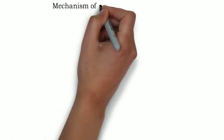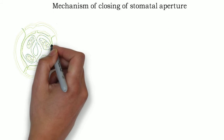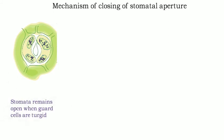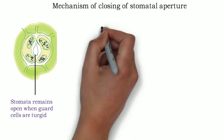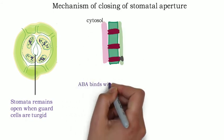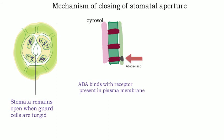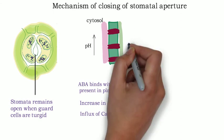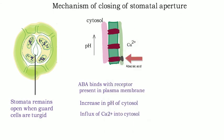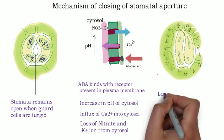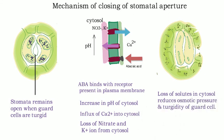Another important role of abscisic acid is closing of stomatal aperture under low water availability. Stomata remain open when guard cells are turgid and close on loss of turgidity. Abscisic acid binds with surface receptors of plasma membrane present on guard cells of stomata, activating several interconnecting pathways. This results in an increase in pH in the cytosol, followed by transfer of calcium ions from vacuole to cytosol. It also stimulates loss of negatively charged nitrate and chloride ions and loss of potassium ions from the cell. Loss of these solutes in the cytosol reduces osmotic pressure and turgidity of the cell, resulting in closing of the stomatal aperture.